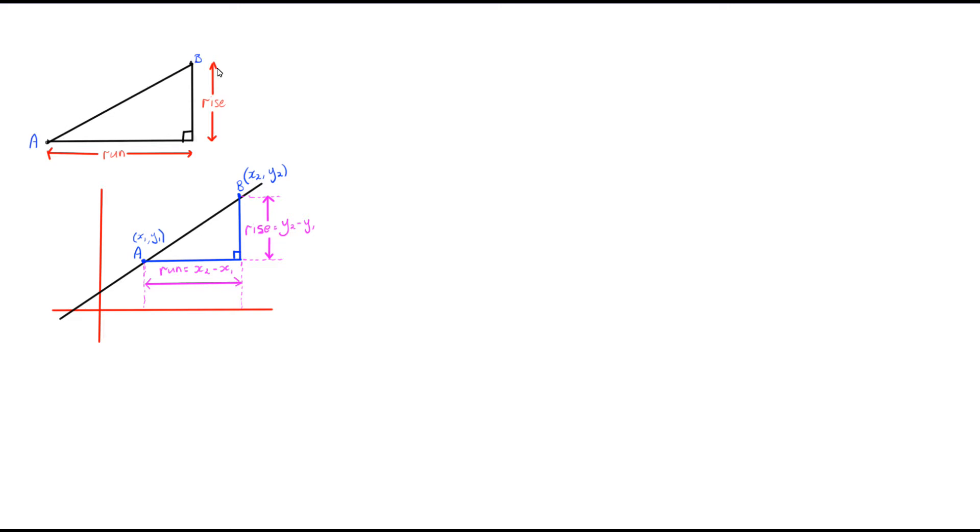Now, that might be slightly shallower than if we were to draw one between these two points, A and B. As you can see, it's much more steeper than it is between the first one. So that's all the gradient tells us, is how steep this slope is.